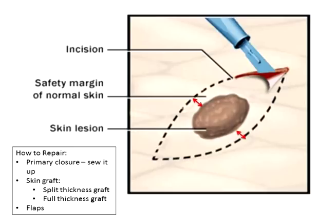The width of what we remove is two times that margin plus the diameter of the mole we're taking. So a five millimeter margin can easily be a two and a half or three centimeter — almost an inch wide — ellipse. We do that because it creates an easier, more cosmetically appealing, and functionally better repair. By lengthening the tissue removed and pulling it together, we distribute the tension over a larger area. It scars better, there's less tightness, even though the skin scar is technically longer.